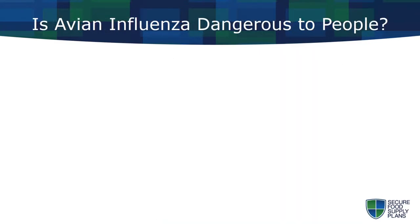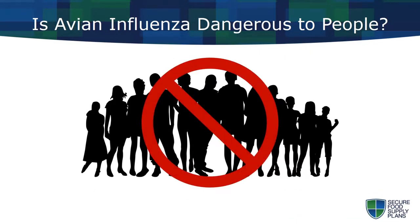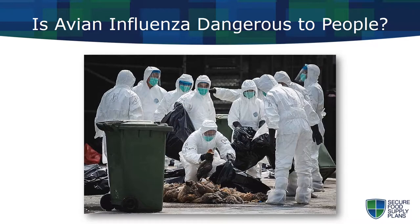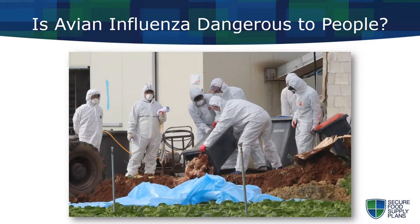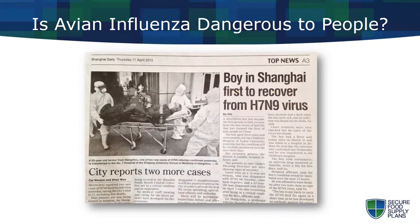Most strains of avian influenza are not capable of infecting humans. For instance, during the 2015 outbreak, in spite of the fact that over 47 million birds died or were destroyed, there were no reports of serious illness or death among U.S. poultry industry employees or depopulation crews. There are, however, a limited number of strains that have caused illness and death in people. These rare human infections with avian flu virtually always involve intimate contact with infected birds or undercooked bird products.